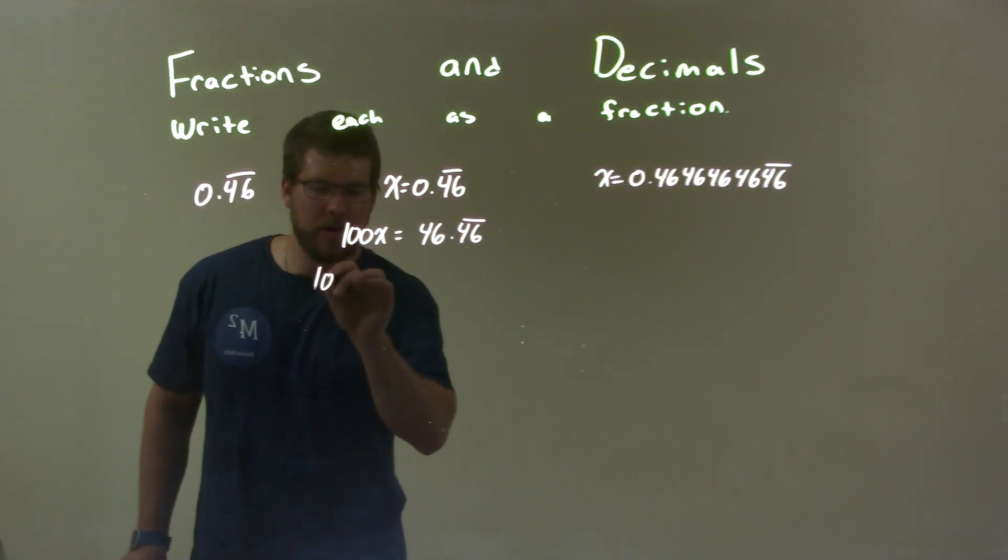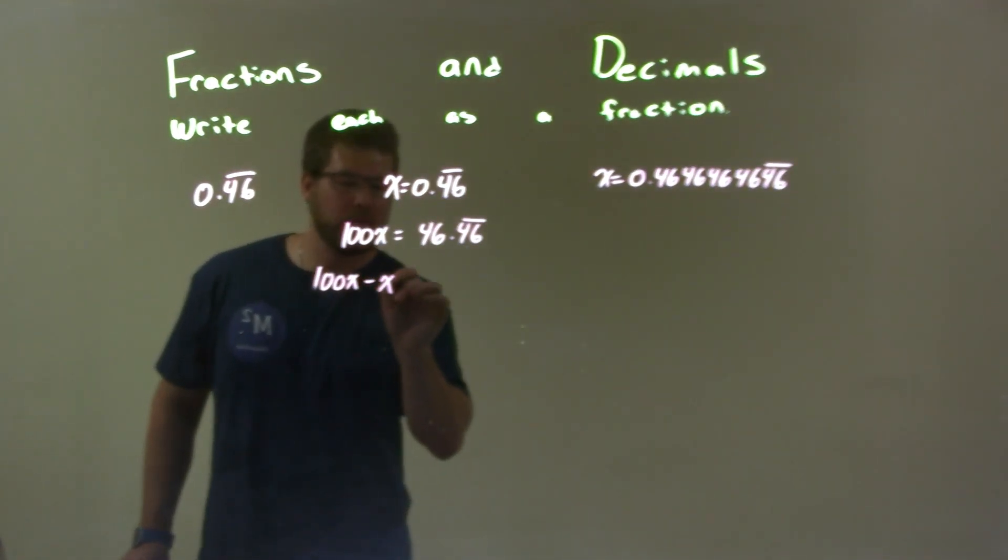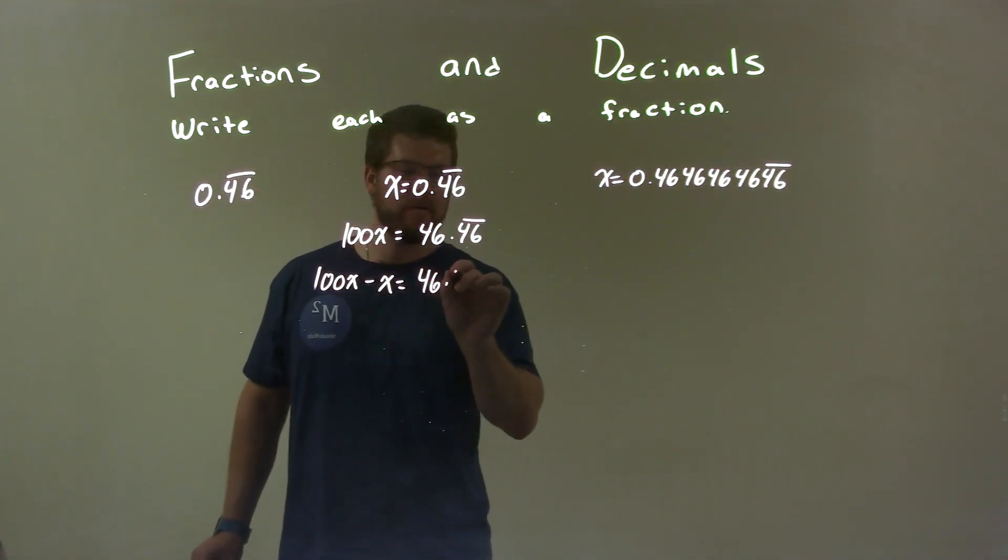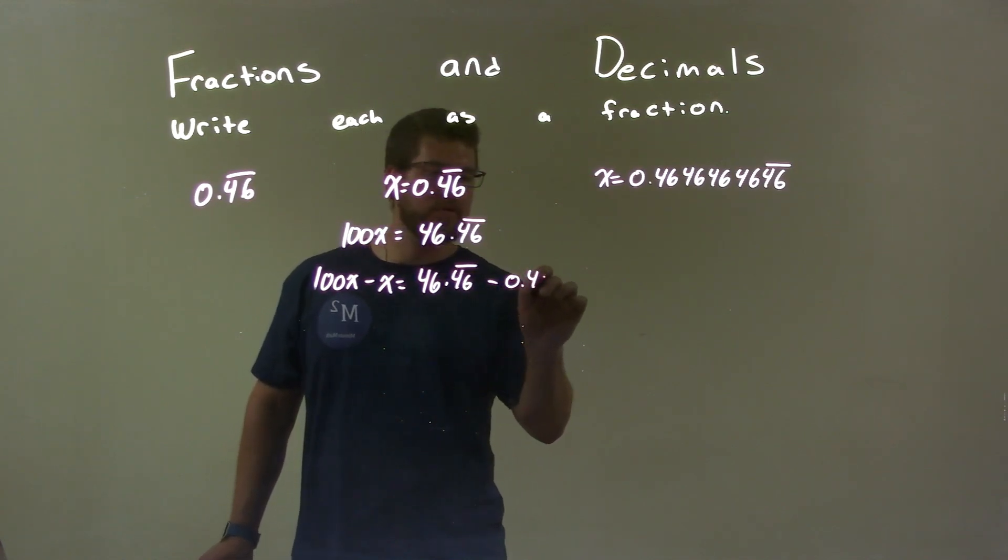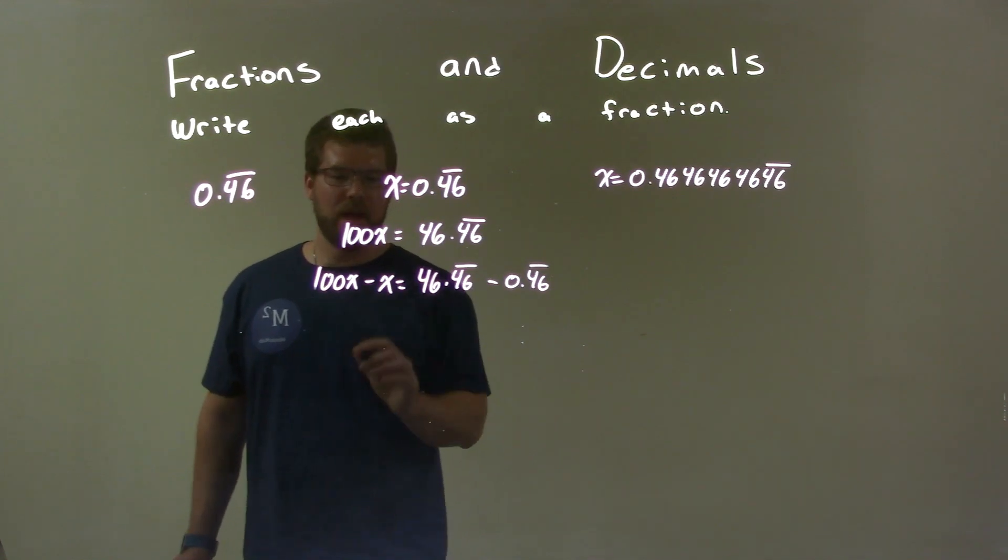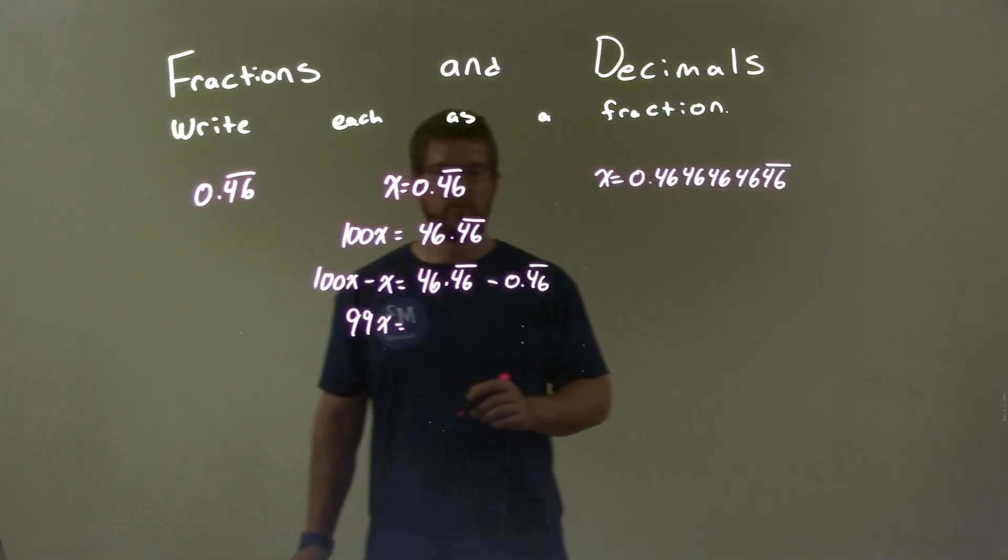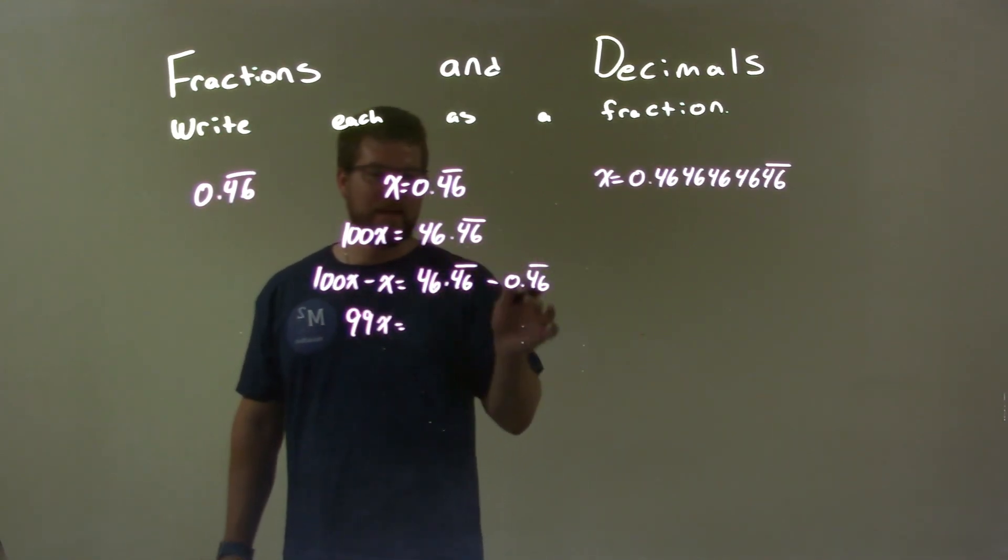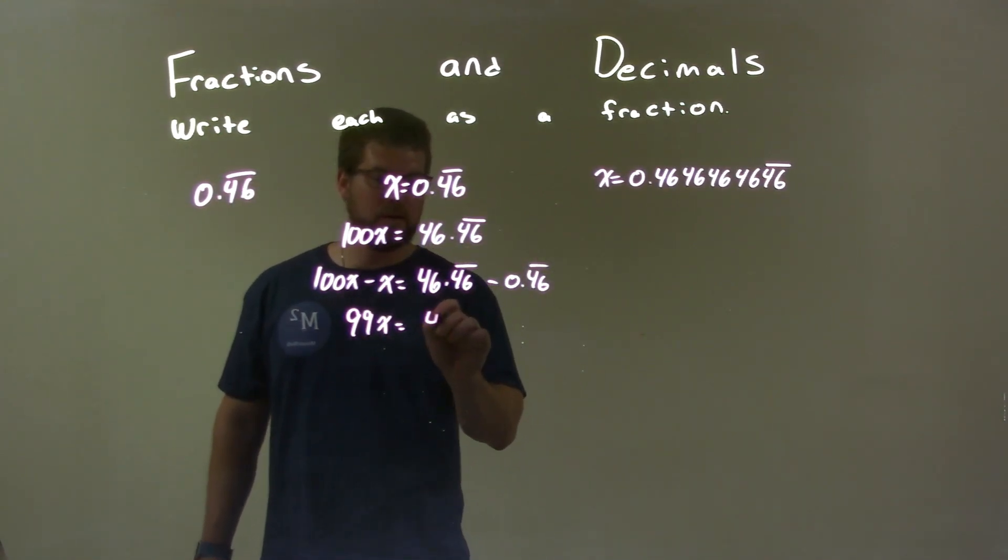Now watch this. We have 100x minus 1x, right? Well, if 100x is 46.46 repeating, 1x is just 0.46 repeating. You can simplify that: 100x minus x is 99x. And 46.46 minus 0.46, even when it's repeating forever, they cancel out and you're left with just 46.